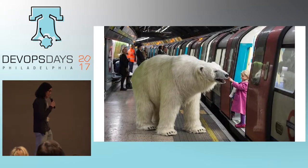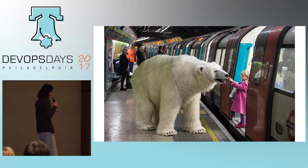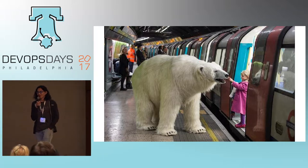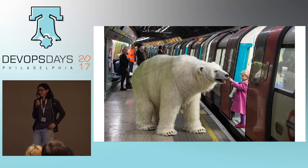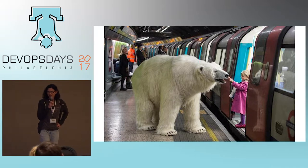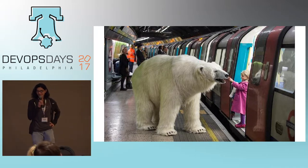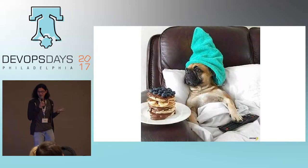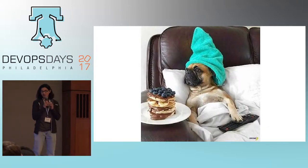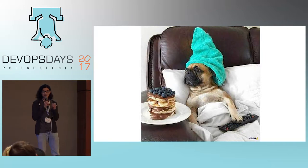Sometimes we ignore the polar bears in our stack and try to cram them onto our fast Kubernetes string. It's just not going to work. Because sometimes the polar bear just wants to be in its native environment. We've got to treat it like a pet. Sometimes our pets — we all have pets in our infrastructure — sometimes they really require special care.